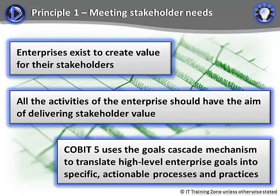Enterprises exist to create value for their stakeholders. You should understand that value can take many forms. Financial value is just one of them. For example, citizens are stakeholders in their local fire department, but the value they expect is not financial. All the activities of the enterprise should have the aim of delivering that stakeholder value, though not at any cost. CoBIT-5 uses the goals cascade mechanism to translate high-level enterprise goals into specific actionable processes and practices.